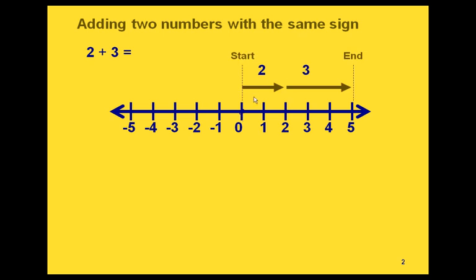So we're starting at 0, going two units to the right for positive 2, and then starting there, we're going three units to the right. That gets us to the end of our problem. If we look at where that ends up on the number line, it ends up at 5. So the answer to our addition problem is positive 5.